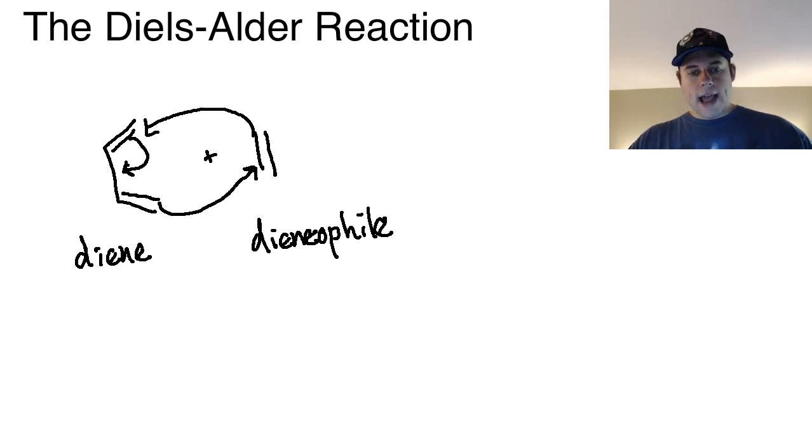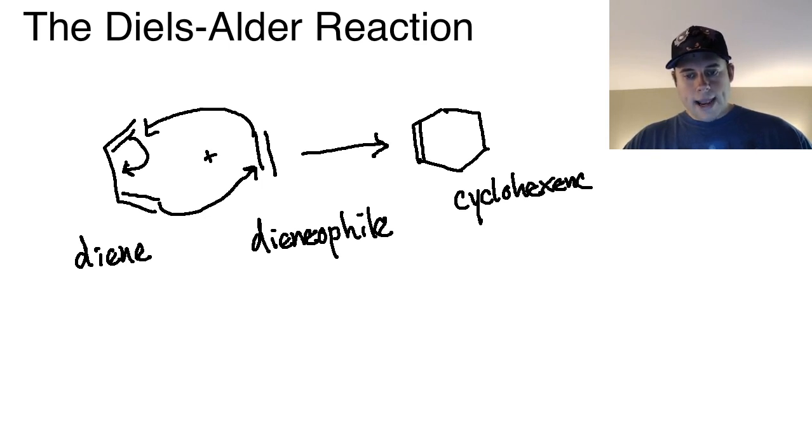This is a very useful reaction because what it allows us to do is take non-cyclic components and create out the other end a cyclic product. We end up in this particular case with cyclohexene. We can get a lot of different variety depending on if we put substituents on the diene or the dienophile. We'll look at more examples of that coming up.